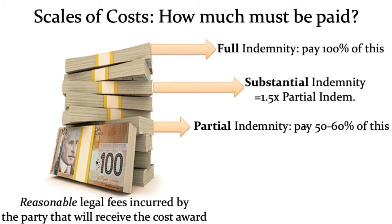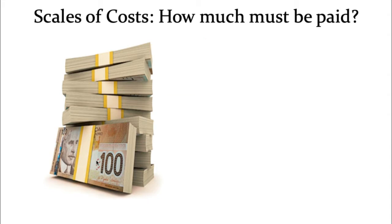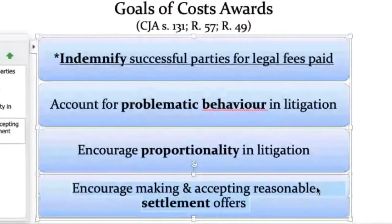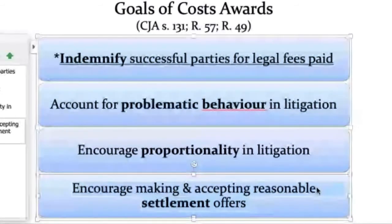If it's going to be substantial indemnity, the court figures out what they would have given on a partial indemnity basis and multiplies it by one and a half. In the hearing clinic case we'll look at a few things that might justify that substantial indemnity award. Most of these goals can work in that way — particularly if the behavior was especially problematic, or a reasonable settlement offer was made and refused. Those are the types of things which get you from partial indemnity up to substantial indemnity costs.